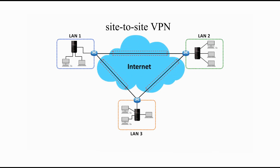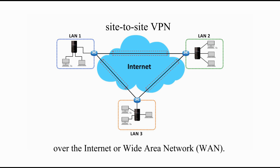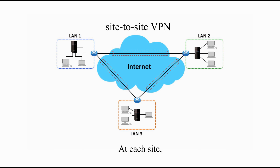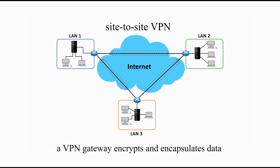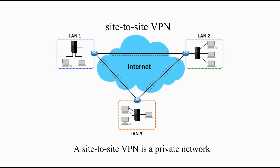In a Site-to-Site VPN, tunnels connect multiple sites over the internet or wide-area network. At each site, a VPN gateway encrypts and encapsulates data to exchange over the tunnel with another VPN gateway.